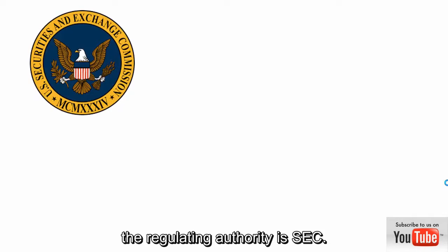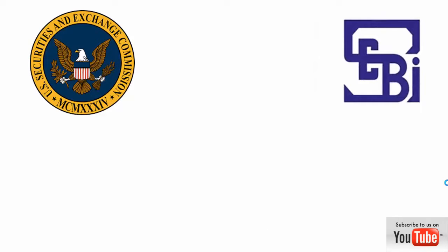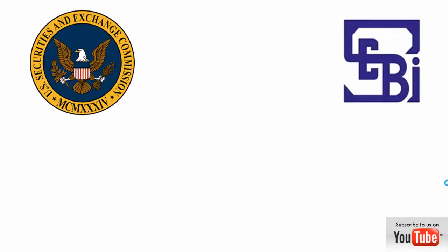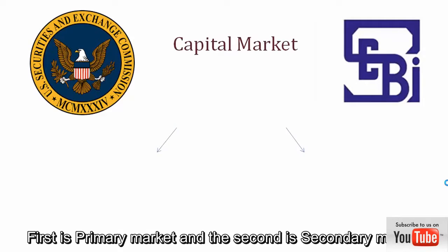In the United States, the regulating authority is the SEC, and in India it is SEBI, and other countries have their own concerned authorities. Broadly classified, capital markets are of two types: the first is the primary market and the second is the secondary market.